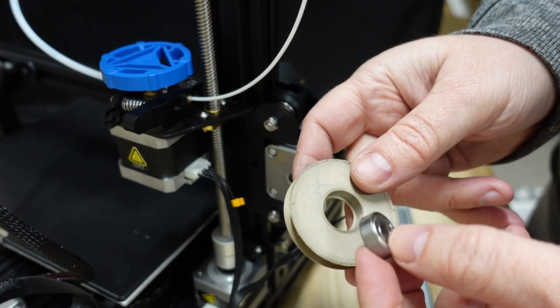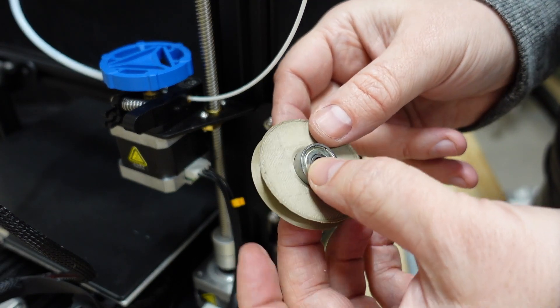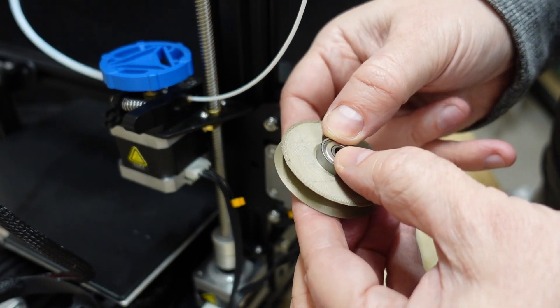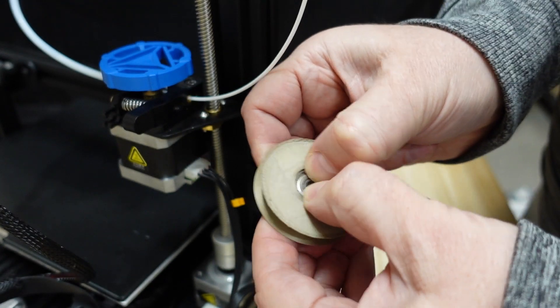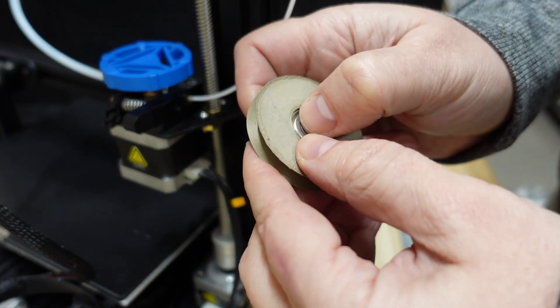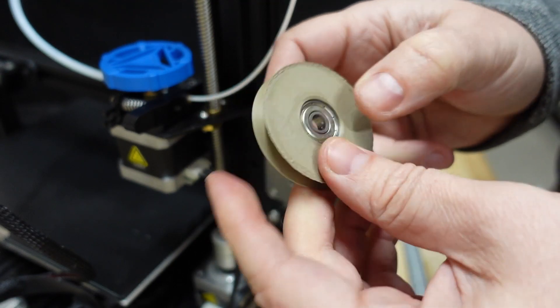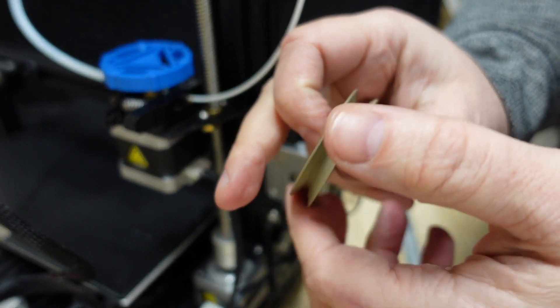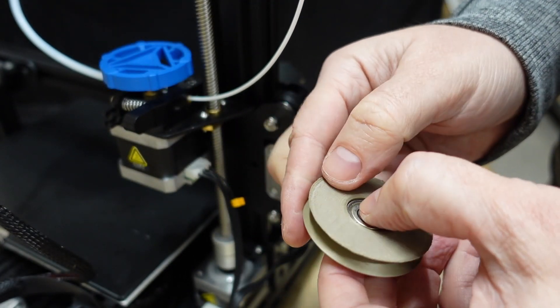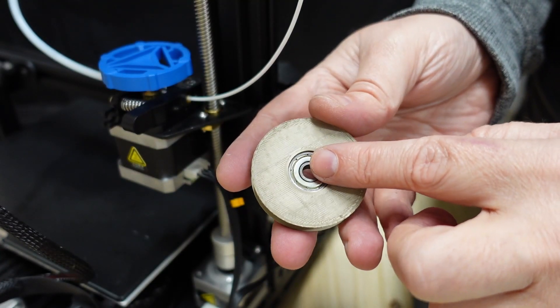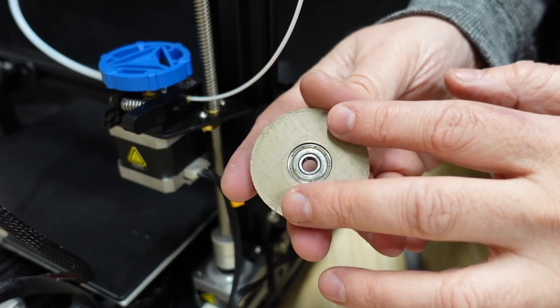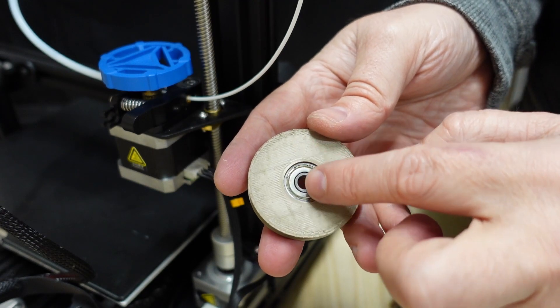But first let's try to insert the ball bearing into pulley. Now if it doesn't go inside, don't have to print new pulley, you can try to place it in hot water.